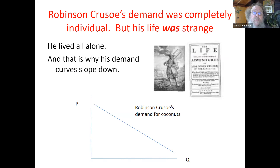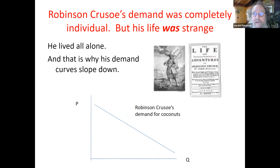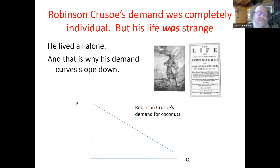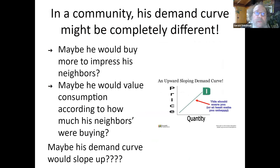Robinson Crusoe's demand was completely individual — he was living by himself, at least until he got his man Friday. In the 17th century, what's a white man without a slave in England or the Netherlands? Of course, when I first read the book in 1968, I didn't notice this. His demand curve sloped down — he was all by himself. In a community, his demand curve may be completely different. Maybe he would buy more to impress his neighbors, or value consumption based on how much his neighbors buy, or learn from watching what his neighbors do.